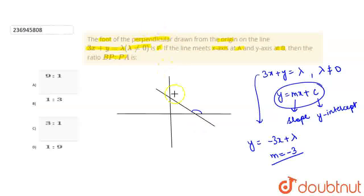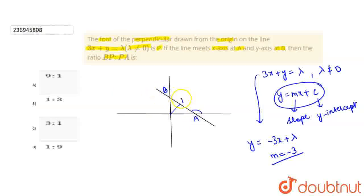तो अब हम देखते हैं कि BP : PA क्या है। सबसे पहले एक perpendicular draw करना है हमें from the origin, जो line पे P पे meet कर रहा है। यह A है, यह B है, और यह P है। Question में बोला गया है कि x-axis पे वो meet कर रहा A पे, y-axis पे वो meet कर रहा B पे। तो ठीक है, हमने mark कर दिया।